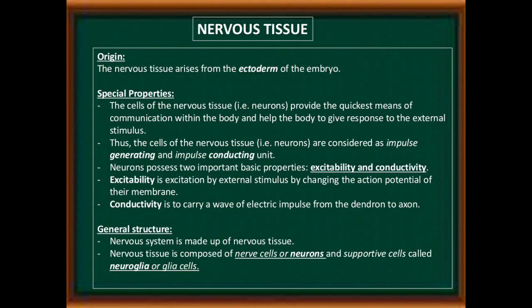Neurons possess two important basic properties: excitability and conductivity. Excitability is the excitation by external stimulus by changing the action potential of the membrane. Conductivity is the ability to carry a wave of electric impulse from dendron to axon.